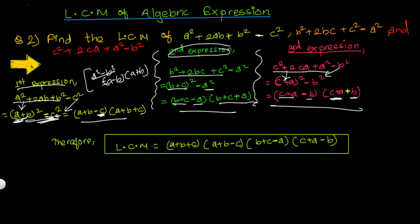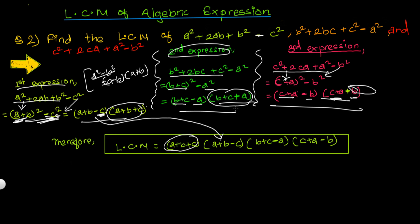Looking closely at the factored forms, each expression contains one factor of the form (a + b + c): the first has (a + b + c), the second has (b + c + a), and the third has (c + a + b) — all the same. So (a + b + c) is the common factor. The remaining distinct factors are (a + b − c), (b + c − a), and (c + a − b). Therefore, the LCM is (a + b + c)(a + b − c)(b + c − a)(c + a − b).